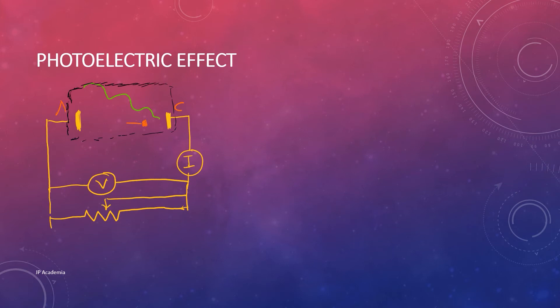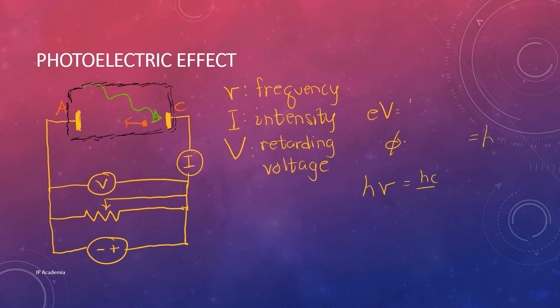Still on the photoelectric effect discussion, we have the following important equations. The electrons will be ejected with various kinetic energies ranging from zero to a maximum value given by the maximum kinetic energy of the emitted electron. This is equal to the energy carried by your photon h nu minus phi, the binding energy of the least tightly bound electron.